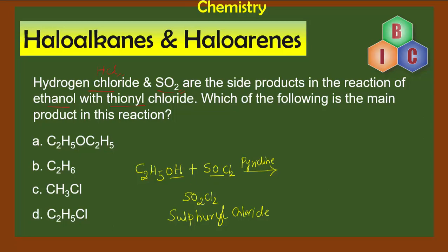There will be a cleavage of the OH bond. This H will come out with one more Cl as HCl, and the SO will take up the oxygen and become SO2. Therefore, the product will be C2H5Cl plus SO2, which is a gas that's getting liberated, and HCl, another gas being liberated.